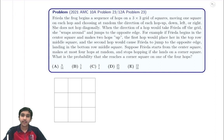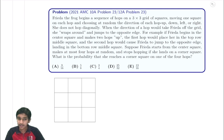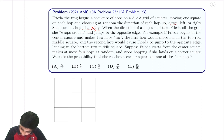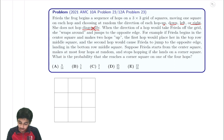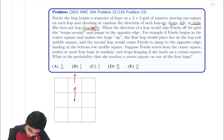Frida the frog begins a sequence of hops on a 3x3 grid of squares, moving one square on each hop and choosing at random the direction of each hop: up, down, left, or right — no diagonal hopping. When the direction of the hop would take Frida off the grid, she wraps around and jumps off the edge. For example, if we start in the center square and go up twice, we wrap around and come back to that same square.